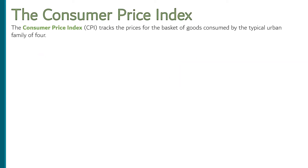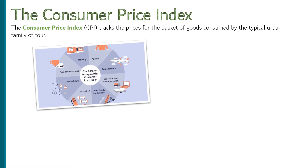The most common approach, and the main approach in the US, is to build what we call a consumer price index. The consumer price index, or CPI, tracks the prices for the basket of goods consumed by the typical urban family of four. They look at the typical things consumers in urban areas are buying, and then they compute a weighted average of all of those prices based on how big a slice they are of the budget of a typical family of four.